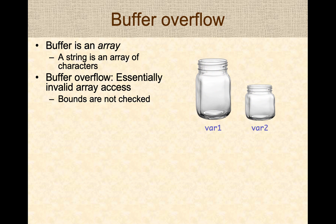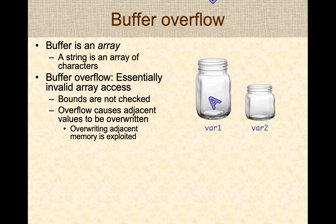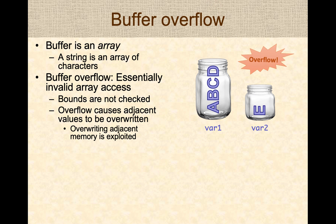What essentially happens is variables are typically stored consecutively in memory. When bounds are not checked and data is stored in the buffer, the data can overflow and overwrite adjacent memory locations. This results in a vulnerability which can be exploited in different ways.